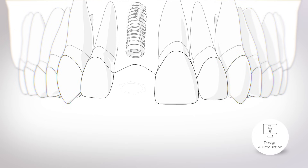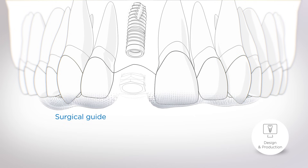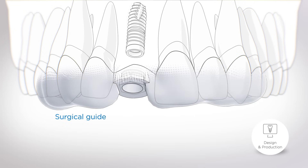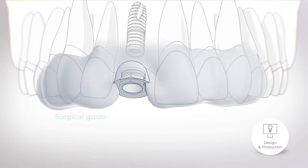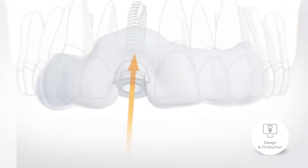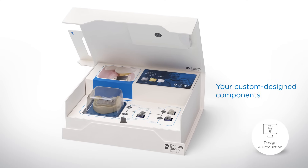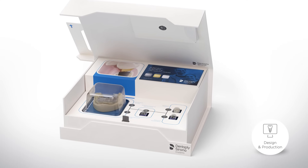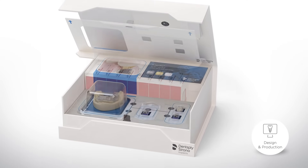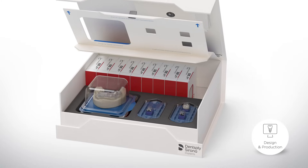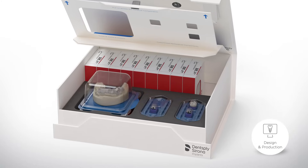An individual, so-called surgical guide is designed to accurately convert the digital design into reality. The surgical guide is designed to fit over your teeth so the implant can be placed into the exact, planned position. All of the customized components required for an accurate and safe treatment are produced and arranged in your personal Azento box, in preparation for your third step.